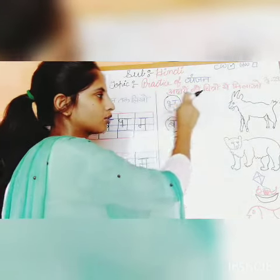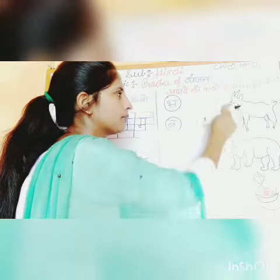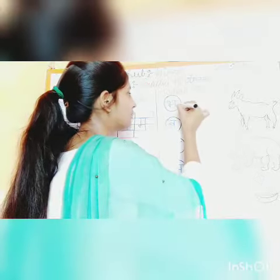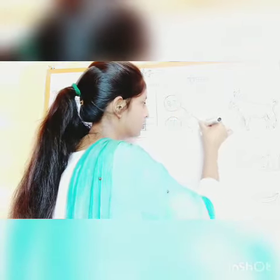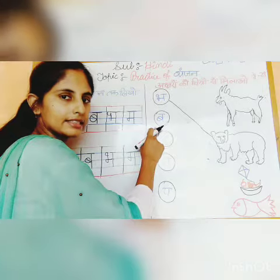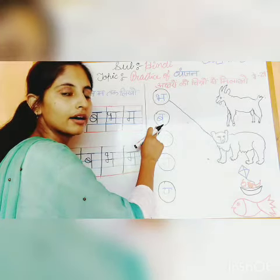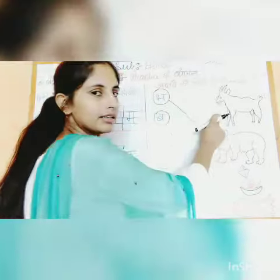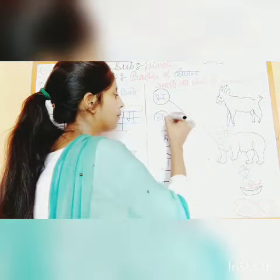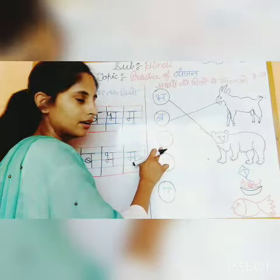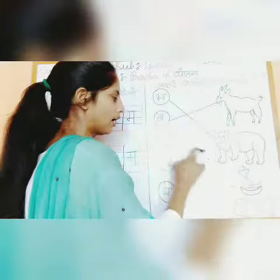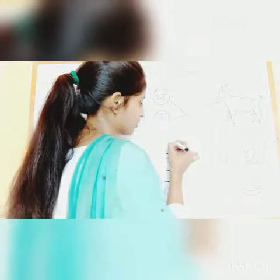What does 'ha' make? Which picture is drawn for 'ha'? 'Ha' makes 'Haalu' — now you have to match ha to baalu. Next akshar — this is 'ba'. Which picture is drawn for 'ba'? 'Ba' makes 'bakri' — so match ba to bakri. Next 'pha' — what does 'pha' make? Phal — so match pha to phal.